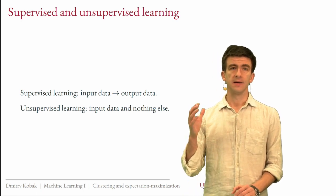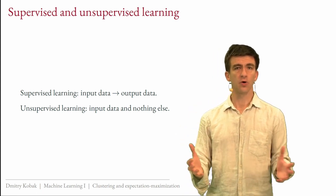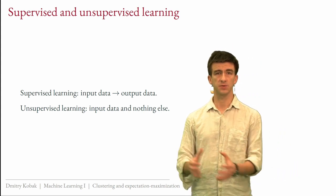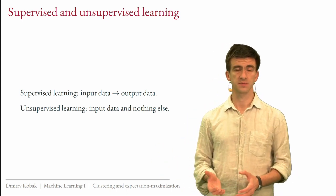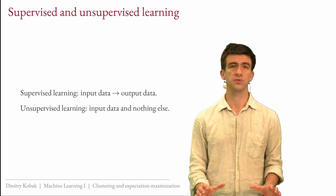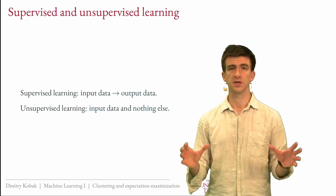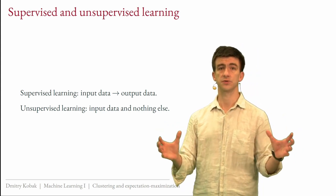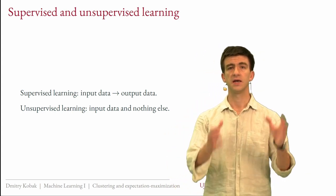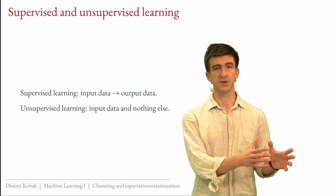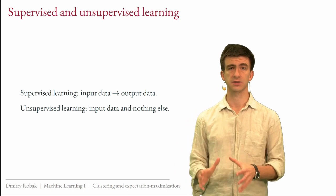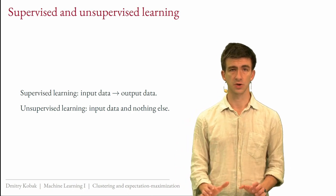So what can we hope to find in the input data if we do not have labels to predict? Broadly, at least in this course, we are going to talk about two different aspects — two different applications of unsupervised learning: dimensionality reduction and clustering. We are going to start with clustering, which is our topic for today.